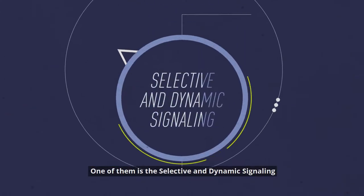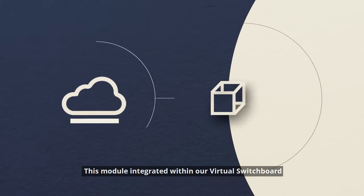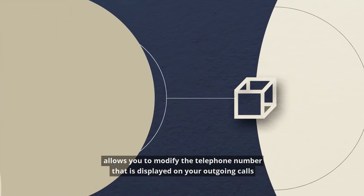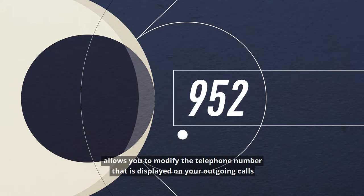One of them is the selective and dynamic signaling. This module integrated within our virtual switchboard allows you to modify the telephone number that is displayed on your outgoing calls.